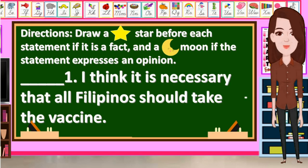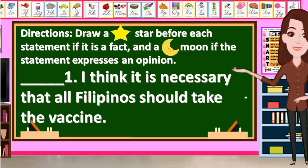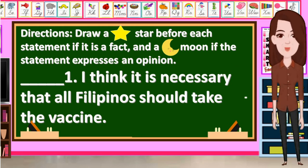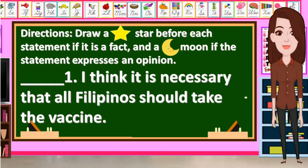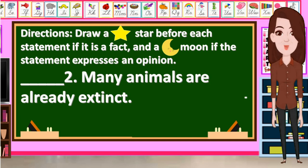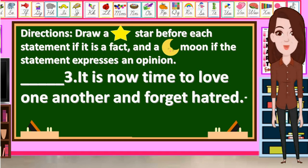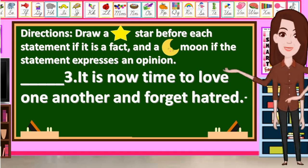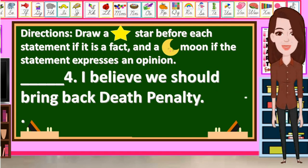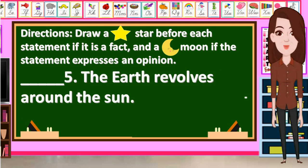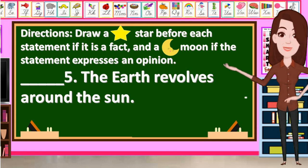Directions: Draw a star before the statement if it is a fact and a moon if the statement expresses an opinion. Number 1: I think it is necessary that all Filipinos should take the vaccine. Number 2: Many animals are already extinct. Number 3: It is now time to love one another and forget hatred. Number 4: I believe we should bring back death penalty. Number 5: The earth revolves around the sun.